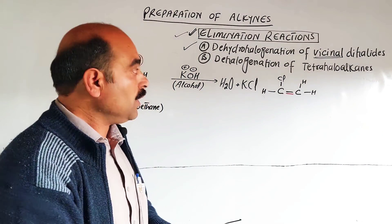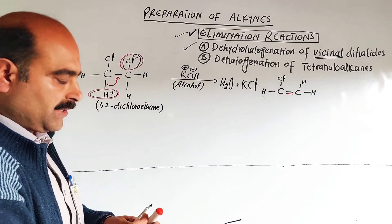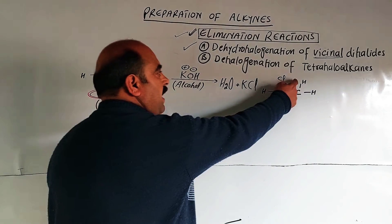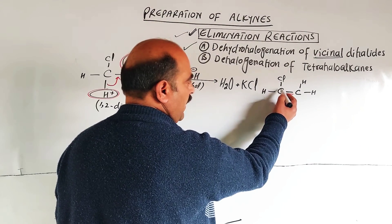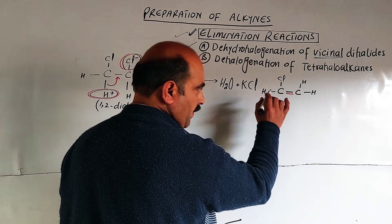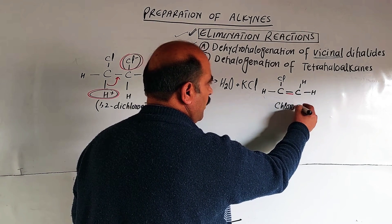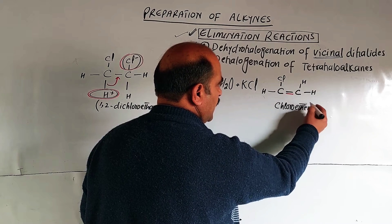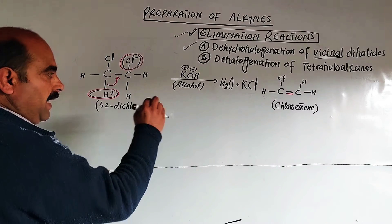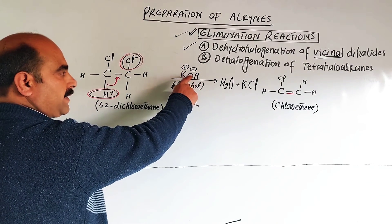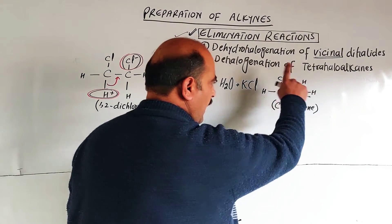Step number one is complete. In step number two, two more atoms are eliminated from the adjacent carbon — a second dehydrohalogenation occurs. The intermediate compound formed at this stage is chloroethene. This chloroethene is more stable than the starting dihalide, so a stronger base is needed. In step two, we use sodium amide (NaNH2) dissolved in liquid ammonia at minus 33 degrees.